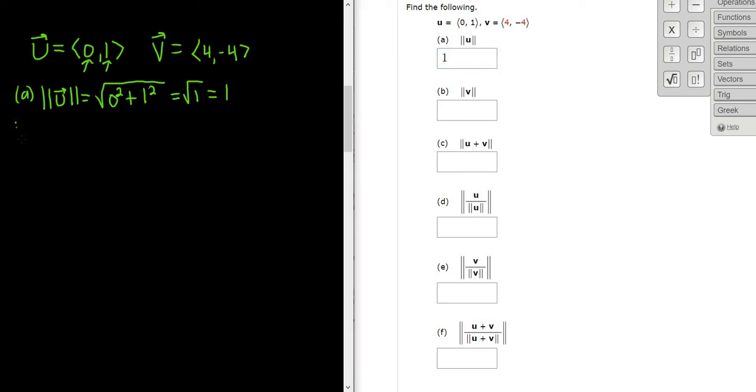Let's go ahead and do part b. By the way, this tells us something about u. This means that u is a unit vector, so a vector that has magnitude 1 is called a unit vector. Let's find the magnitude of v. So again, it's the square root and then you just square each of the components. So you square the first component, so 4 squared plus, and then you square the second component, so negative 4 squared.